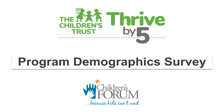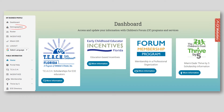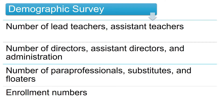Thrive by Five programs are required to submit the demographic survey annually. From the home page, click Demographics to complete the program demographics survey. Gather the following information before beginning the demographic survey: number of lead teachers, assistant teachers, number of directors, assistant directors, and administration, number of paraprofessionals, substitutes and floaters, and enrollment numbers.